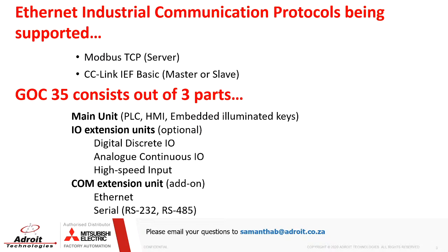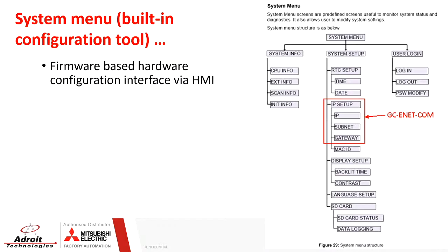At least one communication extension is required to program this GOC device. The Ethernet communication port is the recommended option. Once the Ethernet communication card is added to the HMI you can use the built-in configuration tool called the system menu to configure the Ethernet communication port. It is run via the hardware firmware and is used to set up multiple hardware properties.